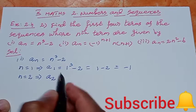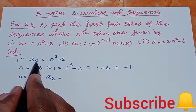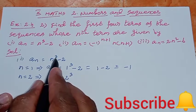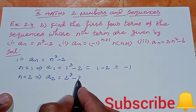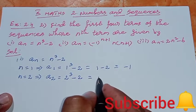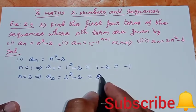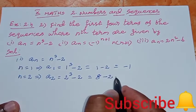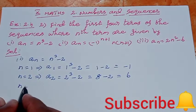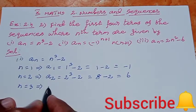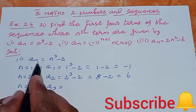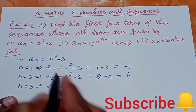Next, a2 is equal to n to the power 3 minus 2, substituting n equal to 2: 2 cubed minus 2 equals 8 minus 2, so the second term is 6. Then for a3, substituting n equal to 3 into n cubed minus 2.